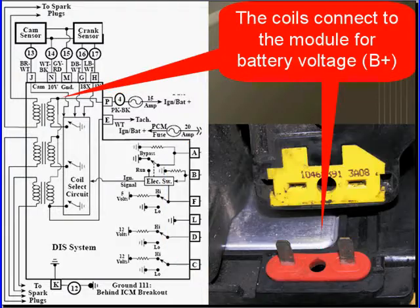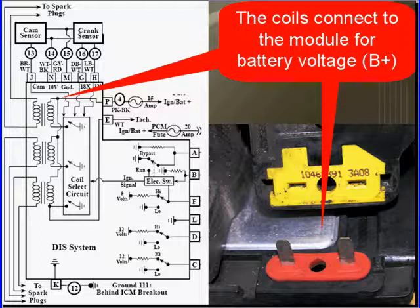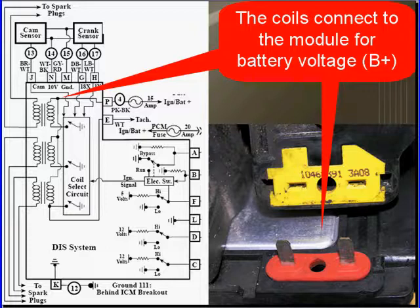The coils connect to the module for battery voltage. In this example you see here, it's just tabs that go to the bottom of the coil.